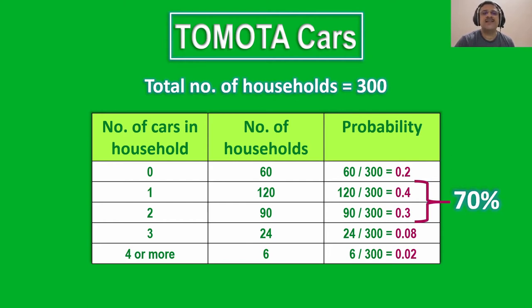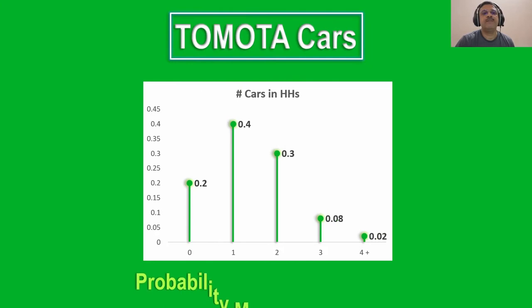This is a sizable number of people and definitely worth chasing by the car manufacturer. When we plot the distribution on a graph, we get the probability mass function since we are dealing with discrete variables. To gain elementary understanding about probability distribution and probability mass function, you should watch the first video in this series.